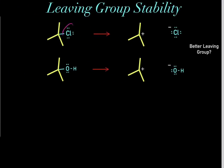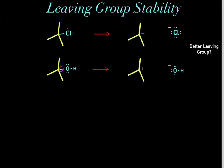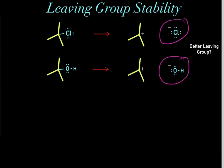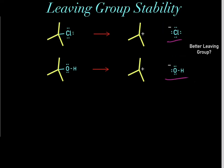Now we may wonder which of these two is the better leaving group, because they can both act as leaving groups. For example, this hydroxyl can act as a leaving group, where we break this bond and these electrons fall on the hydroxyl, forming this hydroxide leaving group. The way you determine which is the better leaving group is by determining which of these formed leaving groups is more stable. The more stable the leaving group, the better the leaving group.